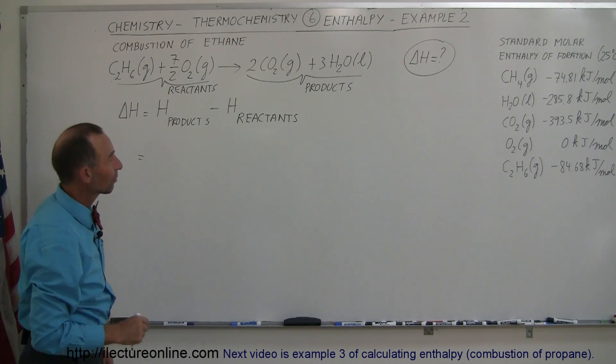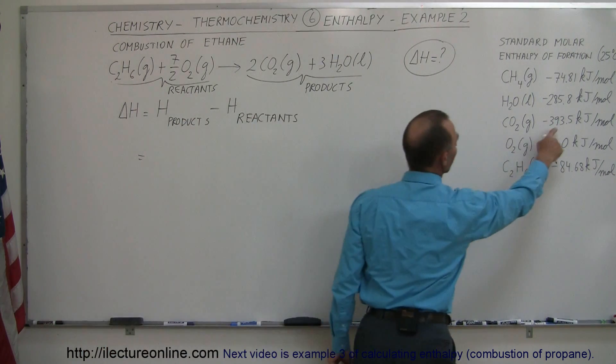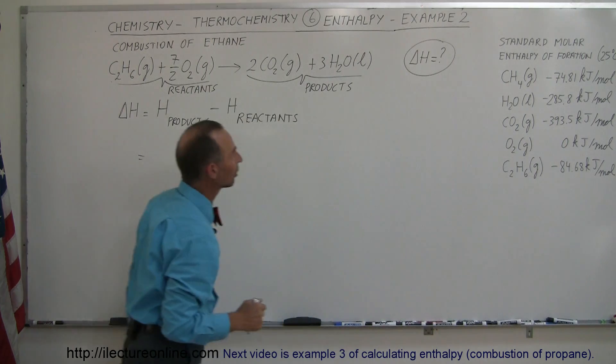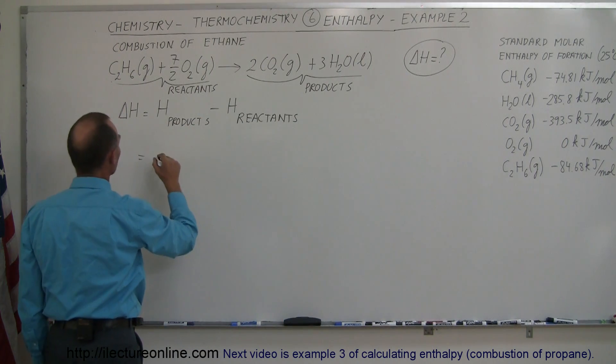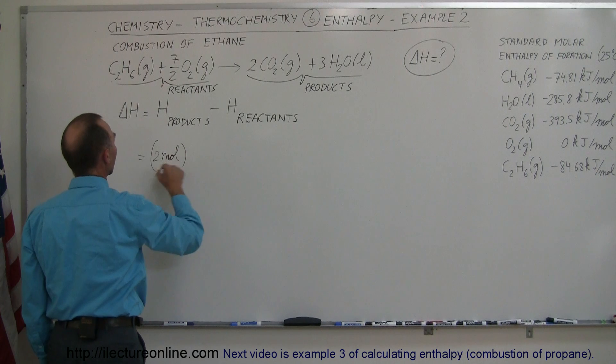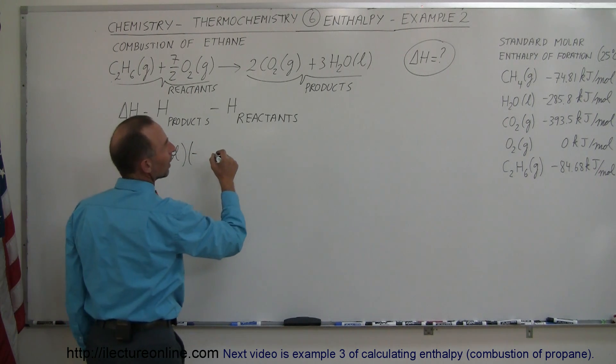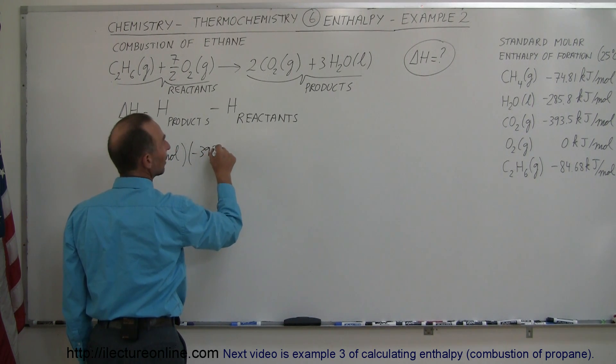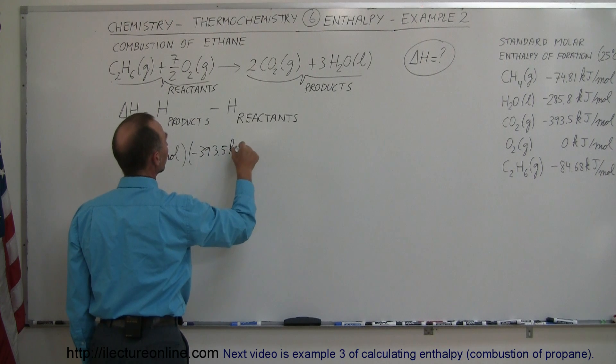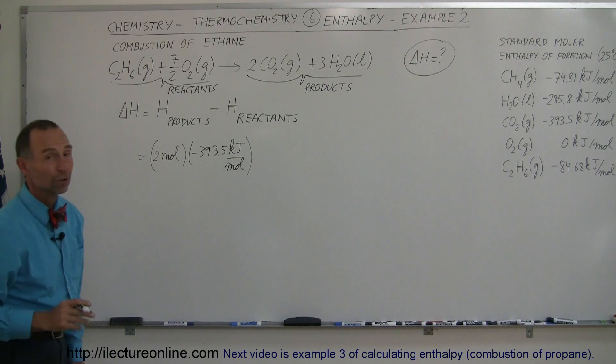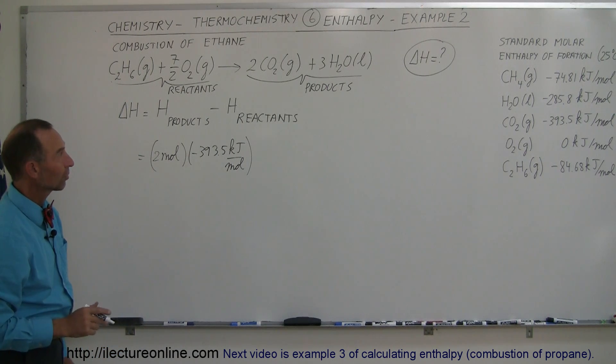Starting with the enthalpy of carbon dioxide, which is over here, minus 393.5 kJ per mole. We have two moles of it, so it's two moles times minus 393.5 kJ per mole. That will give us the total amount of kilojoules for the production of carbon dioxide.